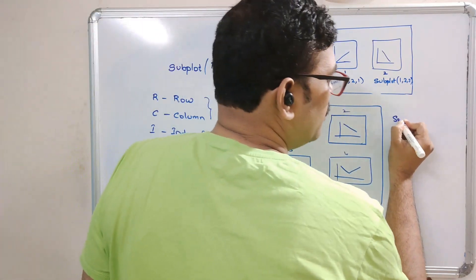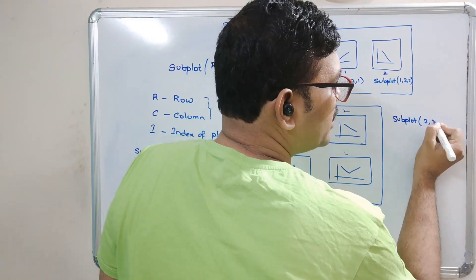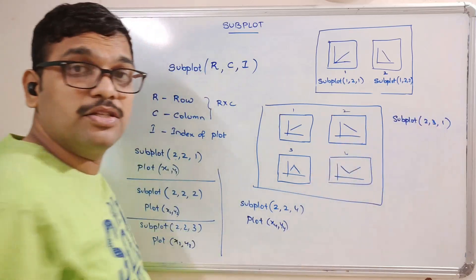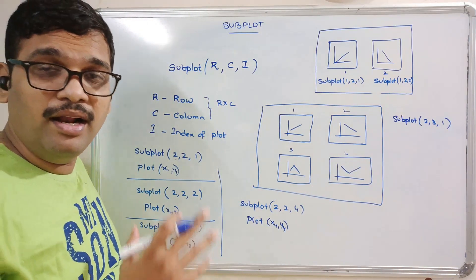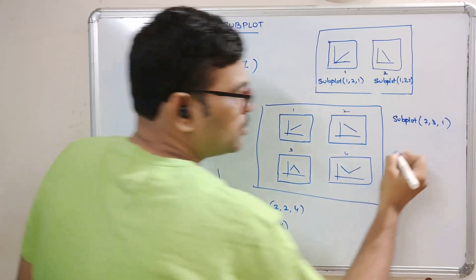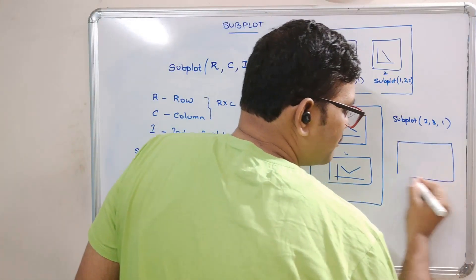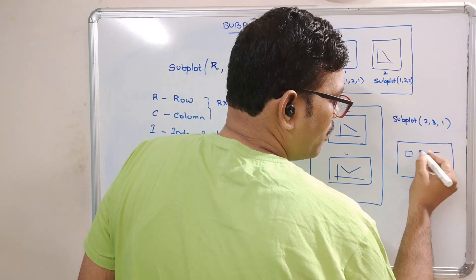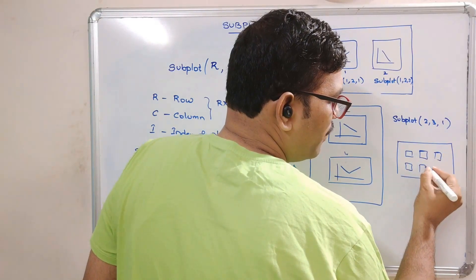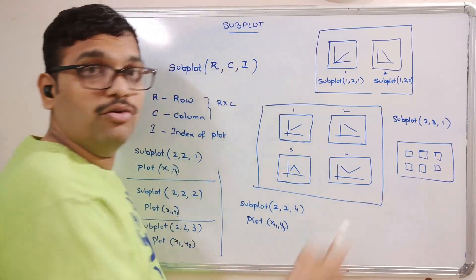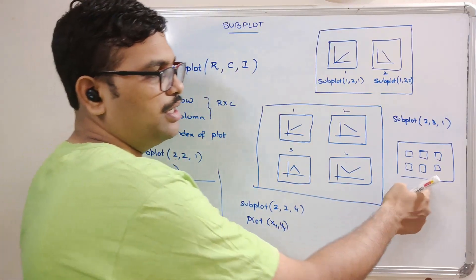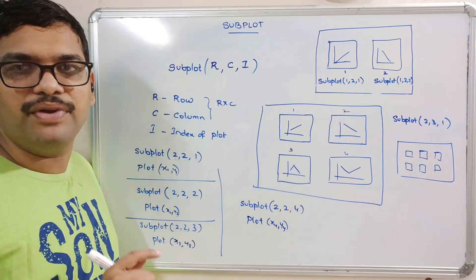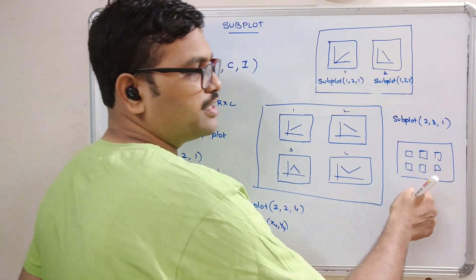If you use subplot(2, 3), that means 2 rows and 3 columns, giving a total of six plots. The layout will have positions 1, 2, 3 in the first row and 4, 5, 6 in the second row. Subplot is used to design a layout for plots in a figure, and you change the index from 1 through 6 accordingly.